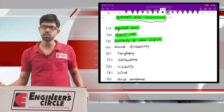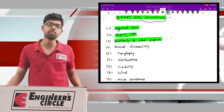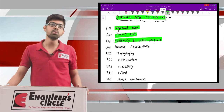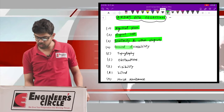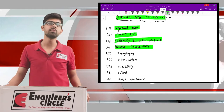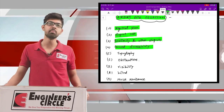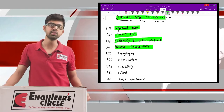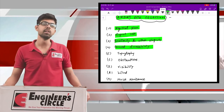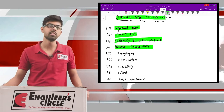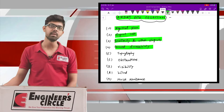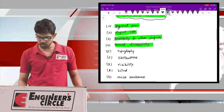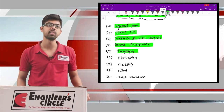The third factor is proximity to other airports — the distance between two consecutive airports must be studied before site selection. Fourth is ground accessibility: since airports are generally constructed at the outskirts of the city, you need to assess what means of transport — such as metro or public transport — are available to reach the airport site.